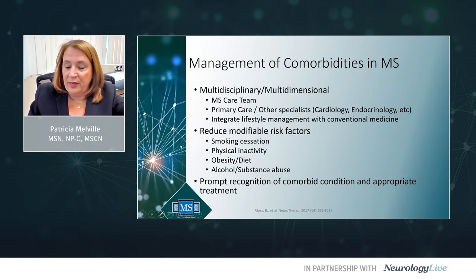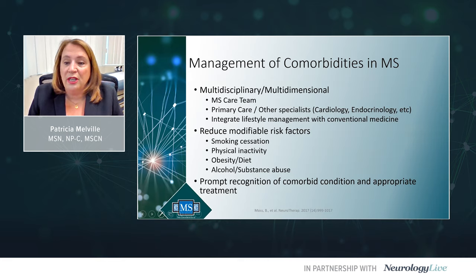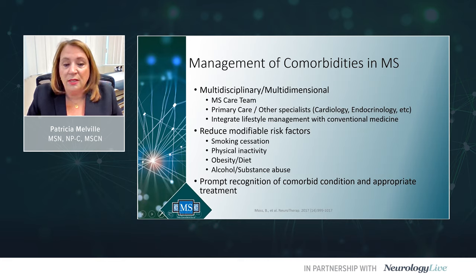To manage comorbidities, we need a multidisciplinary and multidimensional approach involving the MS care team, primary care, and specialists such as cardiology or endocrinology. We want to encourage patients to integrate lifestyle management with conventional medicine — reducing modifiable risk factors including smoking cessation, physical inactivity, obesity, unhealthy diet, and substance and alcohol abuse — and we want to promptly recognize any comorbid conditions and begin appropriate treatment.